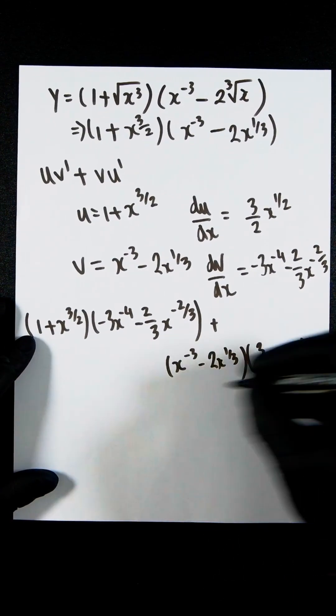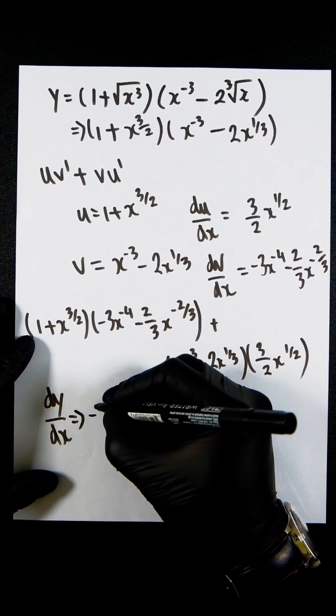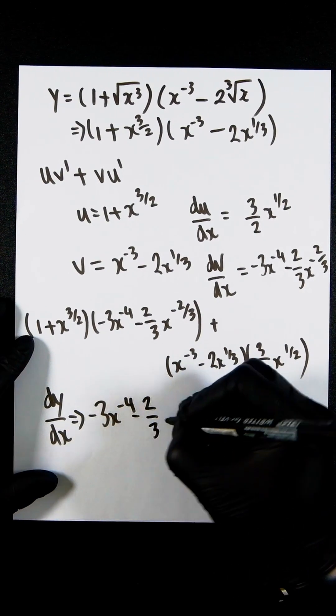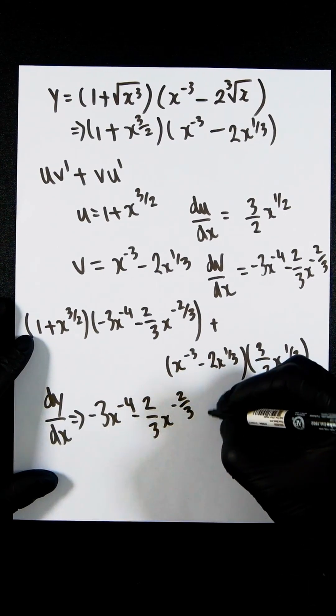But you should get your dy dx to be minus 3x to the minus 4 minus 2 thirds x to the minus 2 over 3 plus.